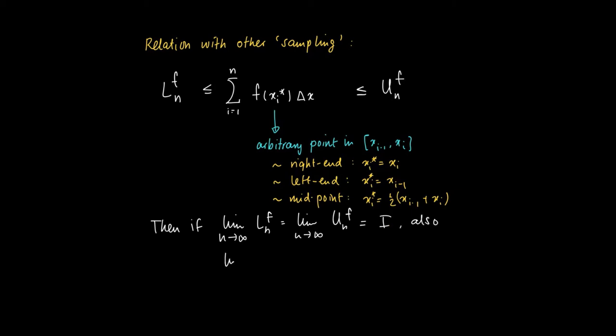Now, what if the limit as n approaches infinity of Ln equals the limit as n approaches infinity of Un? Well, in this case we would say the function is Riemann integrable over the interval [a,b].